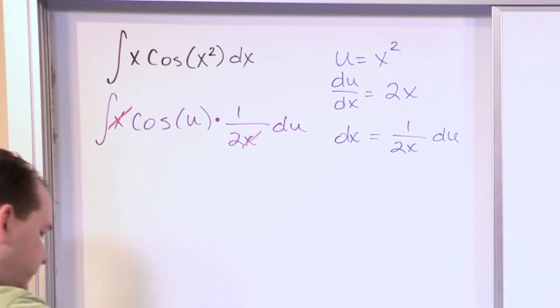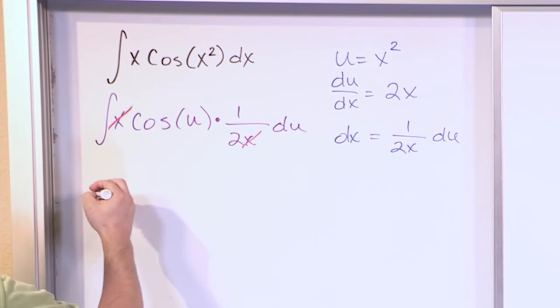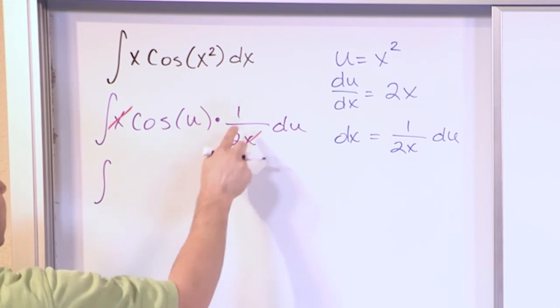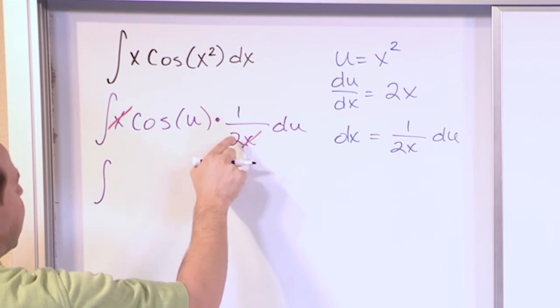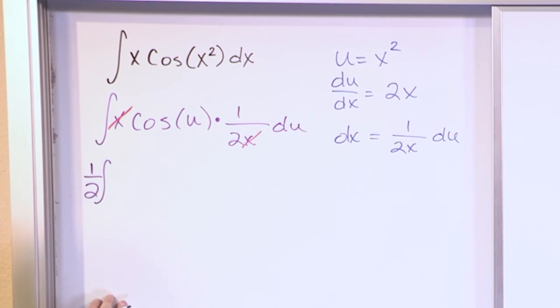So what you're left with, at the end of the day, once that cancellation happens, is the one half is all multiplied out here, so the one half can come out outside of the integral. And on the inside, all you have is cosine of u du.